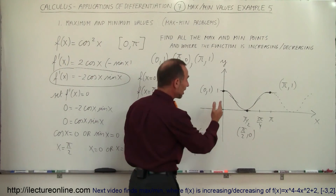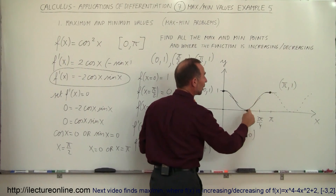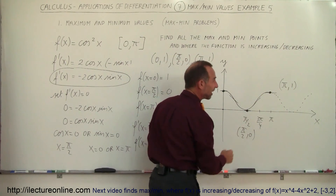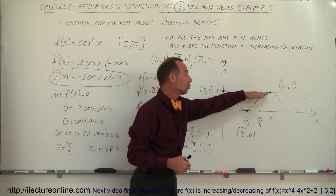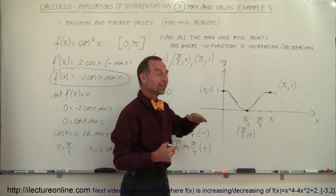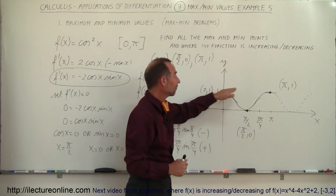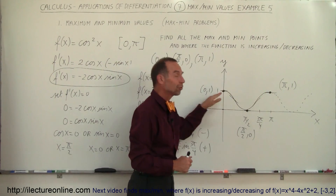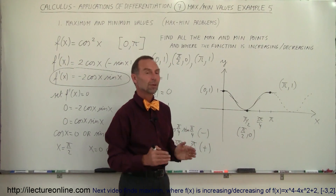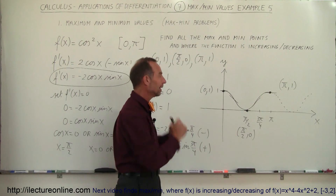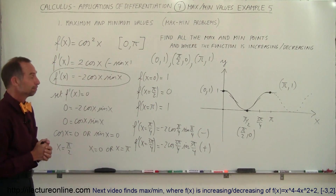Since the interval includes the endpoints, we have two maximum points and one minimum point. These are the highest points on the graph within that interval, and (pi/2, 0) is the lowest point. So we have two absolute maximum points at (0,1) and (pi,1), and one absolute minimum point at (pi/2, 0) on that interval. And that's how we do that.